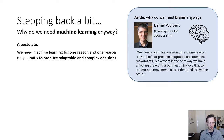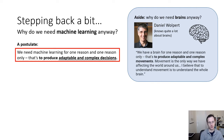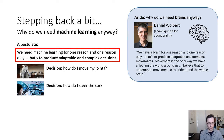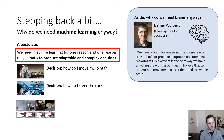I think there's a fairly deep point here, and we can formulate a postulate applying the same lesson to machine learning: we need machine learning for one reason and one reason only — to produce adaptable and complex decisions. It's very clearly true in some scenarios. If you're using machine learning to control a robot, your goal is to make decisions like how to move joints. If you're using machine learning to control an autonomous car, you're making decisions like how to steer the car.